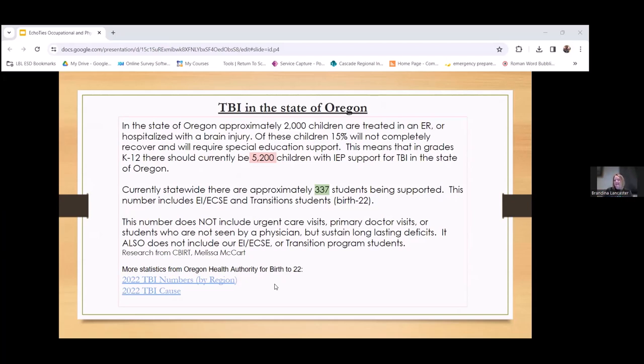At this moment in time, we have 337, and that's from birth to transition. This doesn't include children who have gone to an urgent care or seen their primary physician, or children who didn't seek any medical supports for their injuries. There are a lot of students who need our supports - OT, PT, counseling, speech therapy, academic supports - that simply aren't receiving them.